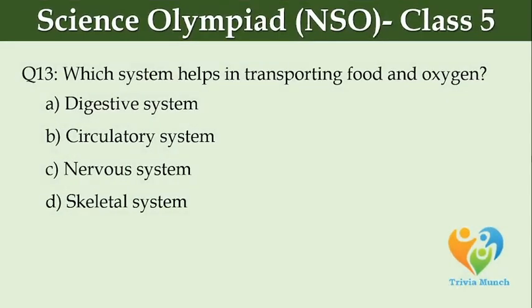Which system helps in transporting food and oxygen? Option A: digestive system, Option B: circulatory system, Option C: nervous system, Option D: skeletal system.